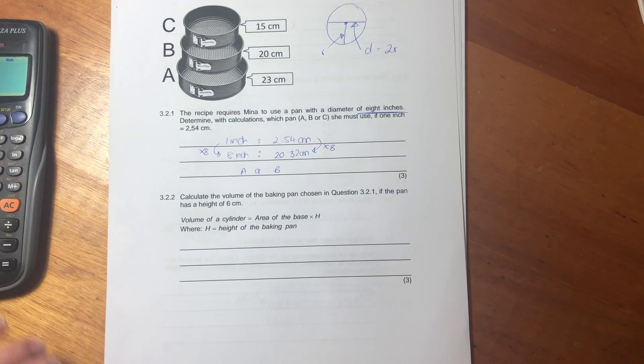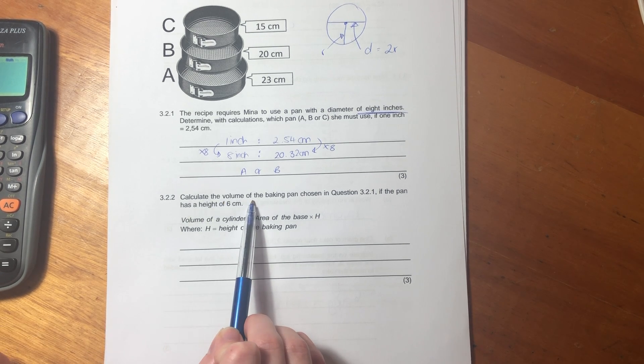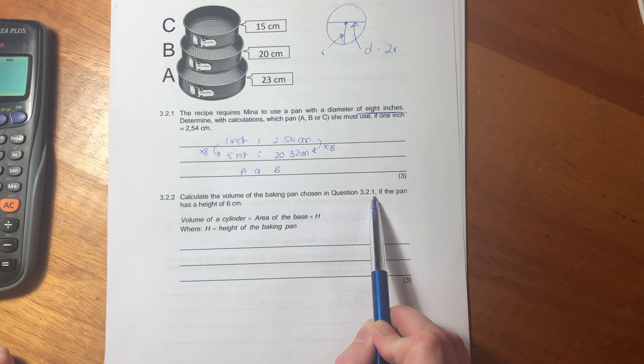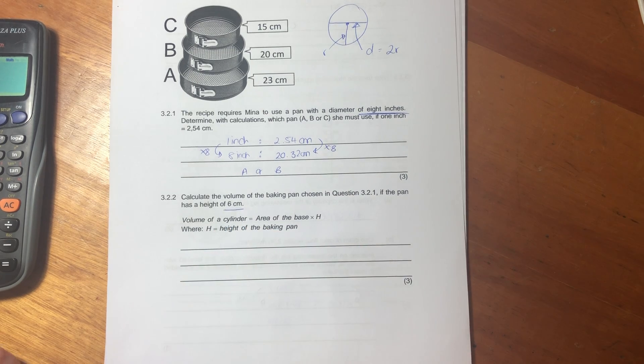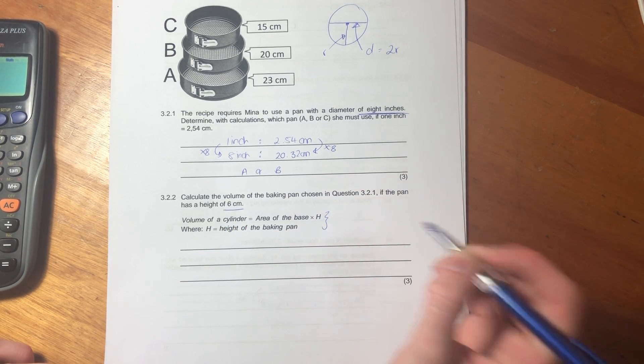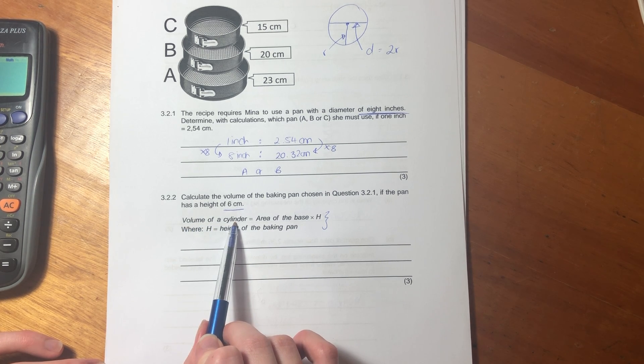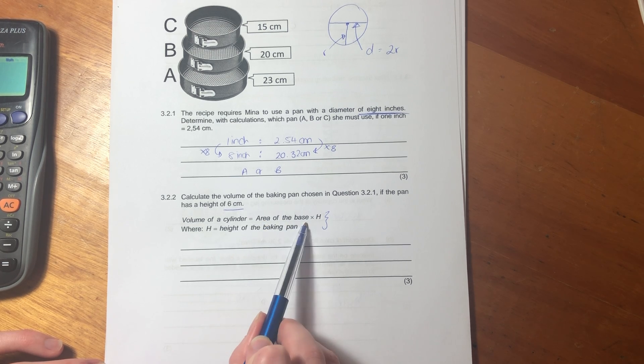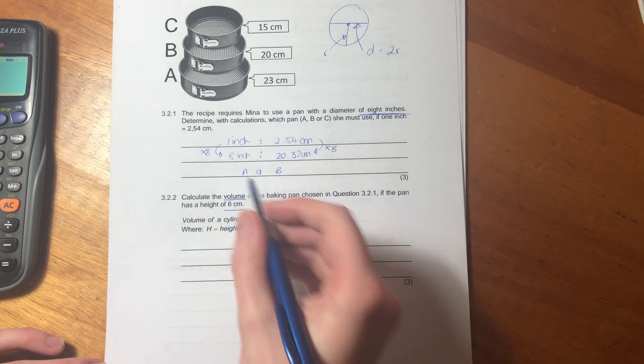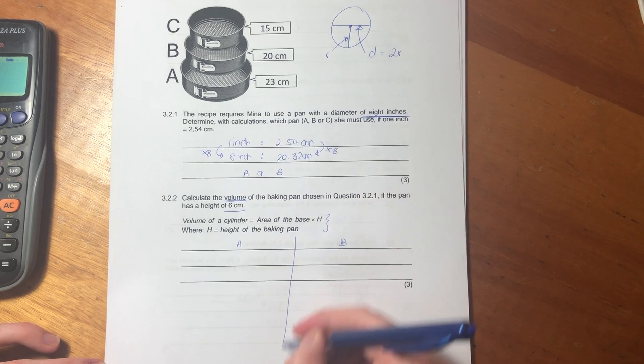Now let's move to 3.2.2. So 3.2.2 says calculate the volume of the baking pan chosen in question 3.2.1 if the pan has a height of 6 centimeters. Ah, lovely. And they gave us some formula. So they said volume of the cylinder equals area of the base times height. And they're asking us for volume. Okay, so remember I said A or B? So I'll calculate it. I'll do it for both, just so that you can see that.